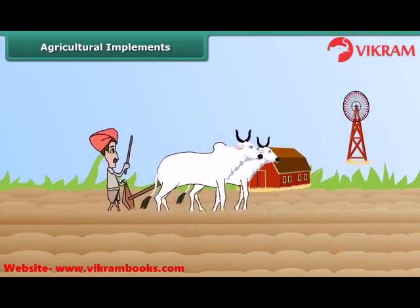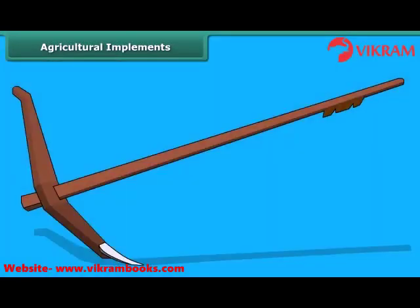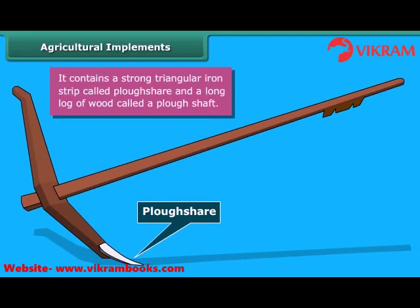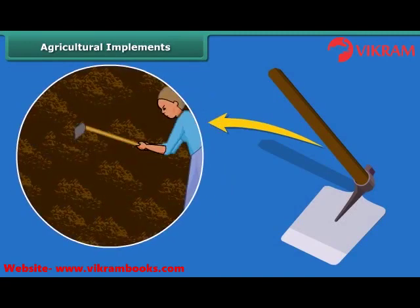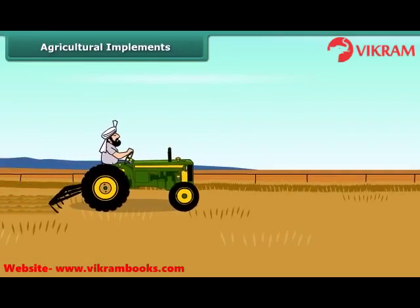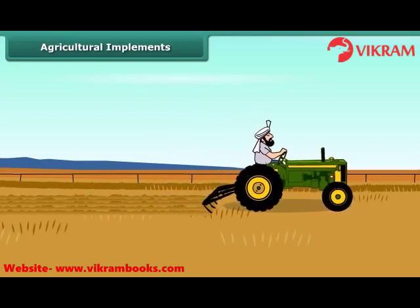Now look at this farmer. He is plowing the field. As we can see, the plow is made up of wood. It contains a strong triangular iron strip called a plowshare, and the main part of the plow is a long log of wood called the plowshaft. Another tool used in plowing is a hoe. It is used for removing weeds and for loosening the soil. It has a long rod of wood, and a strong, broad and bent plate of iron that works like a blade. Most of you must have seen tractors in the farms. Nowadays, plowing is done by a tractor-driven cultivator, which saves both labor and time.